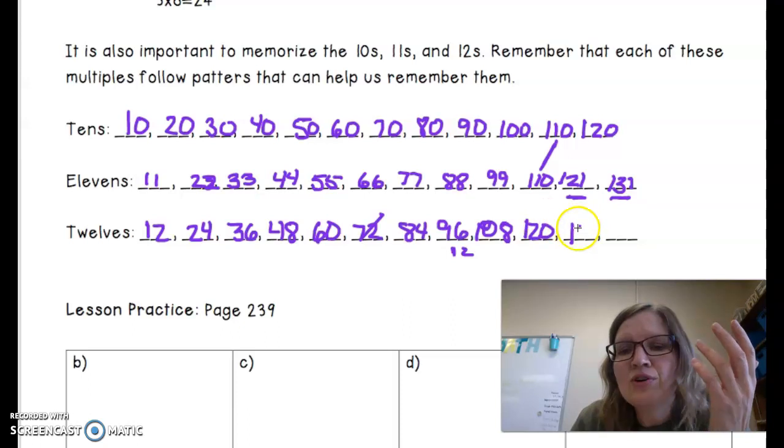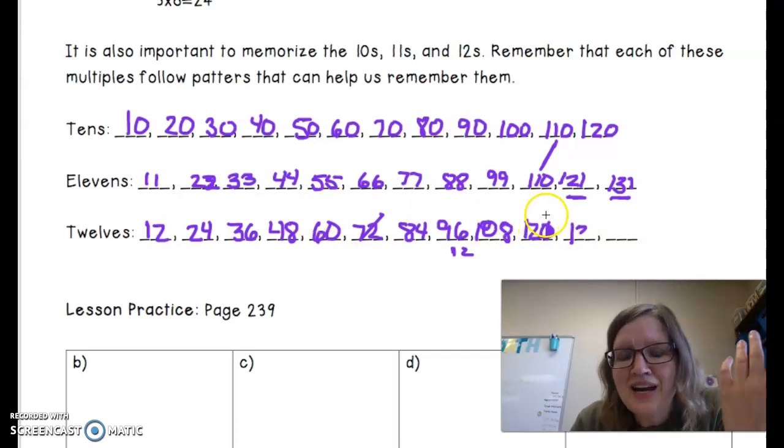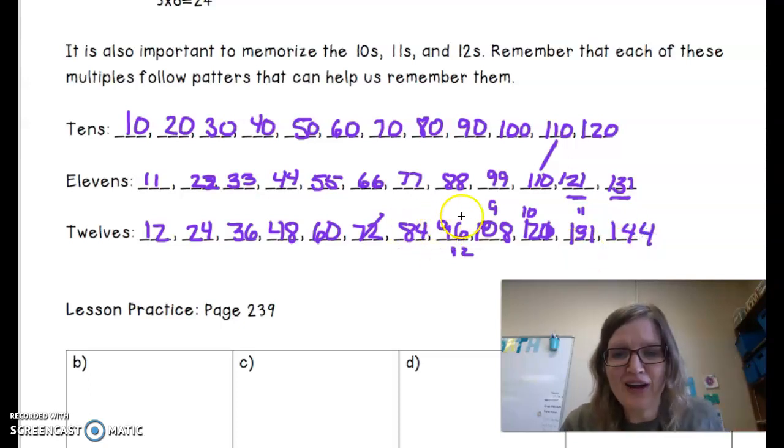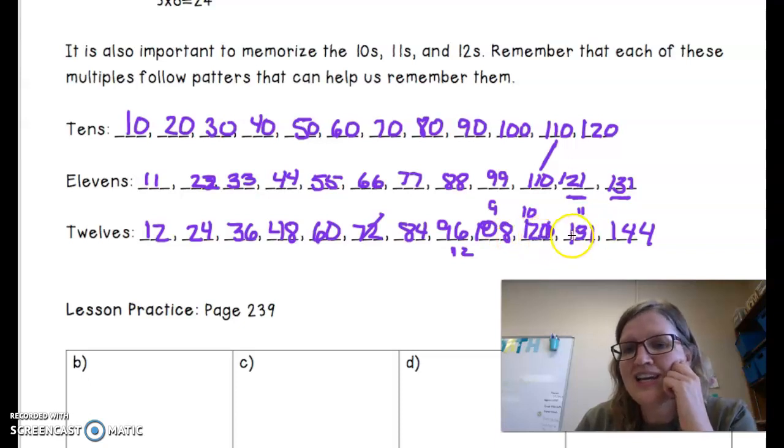Hang on, let me clarify. So we have 12 times 8 is 96. This is 12 times 9, 12 times 10. Now we have 12 times 11, and that is 132. I was starting to panic there. And then 12 times 12 is 144. And this is what happens when I don't have my little numbers out here to help remind me.